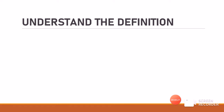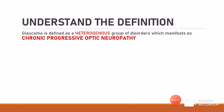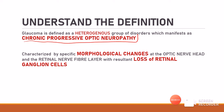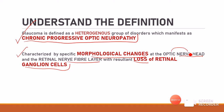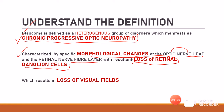First we have to understand the definition of glaucoma. Glaucoma is defined as a heterogeneous group of disorders which will manifest as chronic progressive optic neuropathy. It is characterized by certain specific morphological changes which occur at the optic nerve head and also in the retinal nerve fiber layer, and the final result is the loss of retinal ganglion cells. This loss of retinal ganglion cells will ultimately lead to loss of the visual fields.